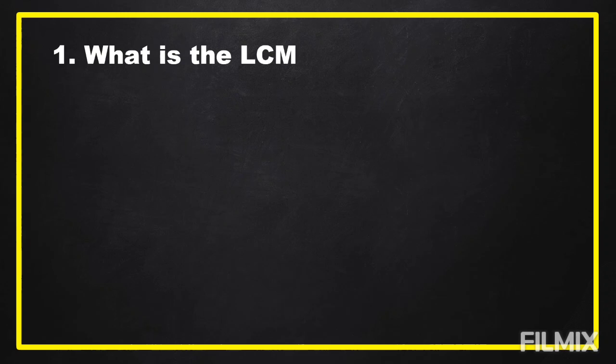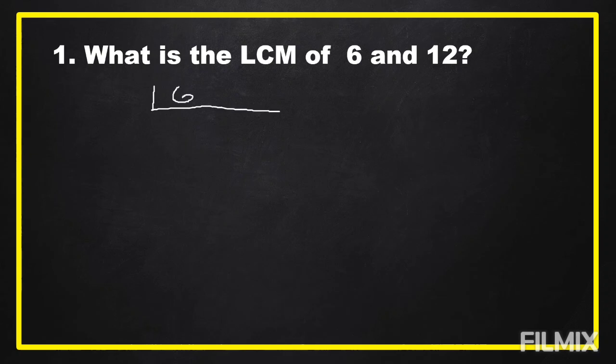To understand the steps in finding the LCM, or the least common multiple, we're going to answer some examples. Number one: what is the LCM of 6 and 12? To get the LCM, we're going to write these numbers in a horizontal line — 6 and 12. Then we're going to find the prime divisor. Six and twelve are both divisible by 2, so we divide by 2.